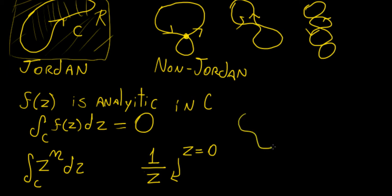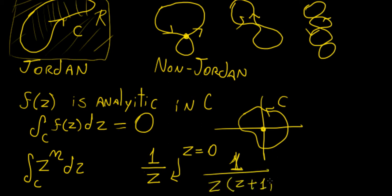So if we have some curve on the xy-plane that somehow surrounds that singularity — this is what we call a singularity or a pole — and the curve encloses it, then the function is non-analytic within C because it has a singularity there. A function that is non-analytic might have more than one singularity; for example, with 1 over z(z+1), z equals zero and z equals minus one both make it undefined, so the function is non-analytic because both singularities lie within that curve.